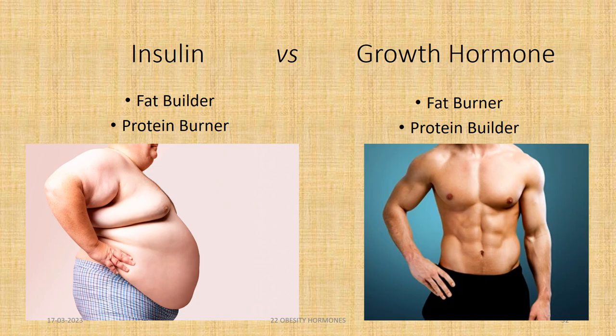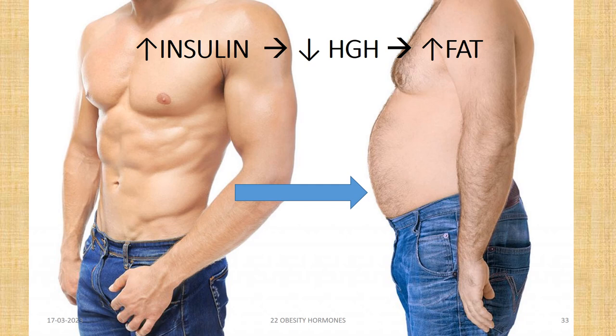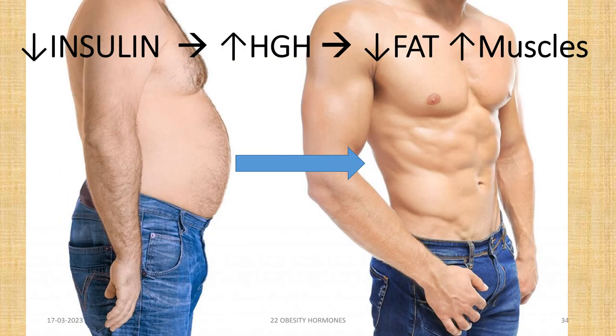To recap: insulin is the fat builder and protein burner of our body, whereas growth hormone is the fat burner and protein builder. Insulin and growth hormone are opposite to each other — when insulin is high, growth hormone is low, leading to buildup of fat and converting a muscular body into a fatty, obese body. If we decrease insulin to near zero and increase human growth hormone, it will burn the fat, build up muscles, and the body can regain shape from fatty and obese back to a masculine or athletic body.